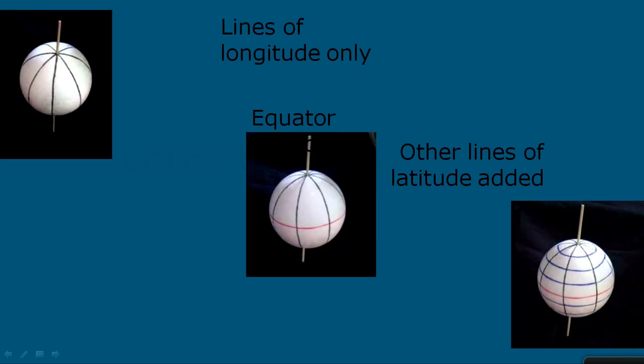Let's understand latitudes and longitudes. In layman's language: if you take an orange and cut it horizontally from the middle, it will divide into two parts making perfect circles — those are latitudes. Latitudes are imaginary lines drawn on the surface of the globe in the east-west direction, and they are parallel to the equator. The equator is that line which divides the globe into two parts.